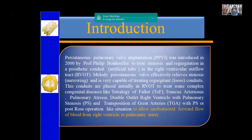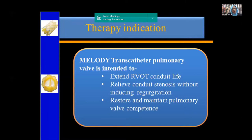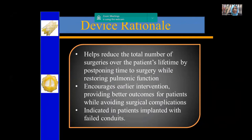When there was a dysfunctional conduit, or severe PR or TR and RV volume overload, this therapy was indicated. My series uses the Melody transcatheter valve. The Melody valve's indication is to extend the RVOT conduit life — to relieve stenosis and to restore pulmonary valve competence by relieving regurgitation. The rationale is that it helps reduce the total number of surgeries over the patient's lifetime, as a dysfunctional conduit may become dysfunctional again and again, requiring multiple surgeries. This valve can reduce the multiplicity of complex surgical procedures and encourages early intervention.